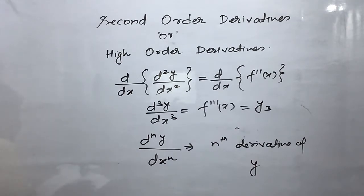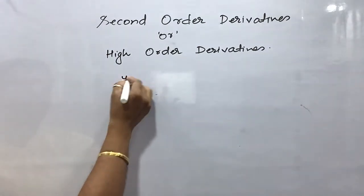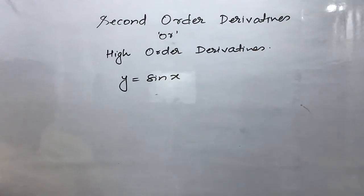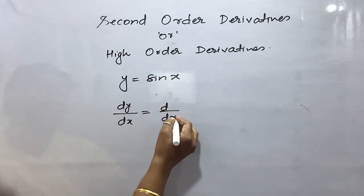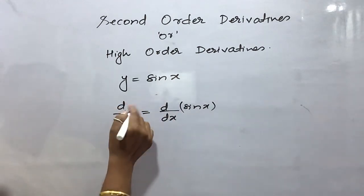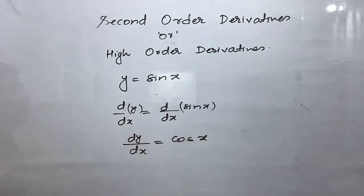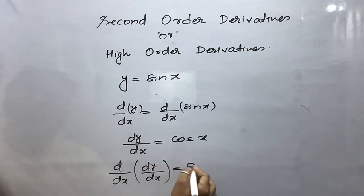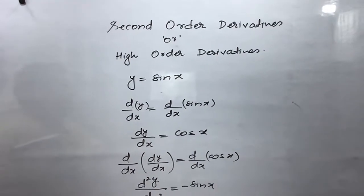Now I am going to explain some questions based on this. Let's take a simple example first. If y = sin x, and you are asked what the second-order derivative will be — everyone knows that dy/dx = d/dx(sin x) = cos x. Now if I differentiate this again, d/dx of (dy/dx) = d/dx(cos x), so d²y/dx² = −sin x. So this is our second-order derivative.